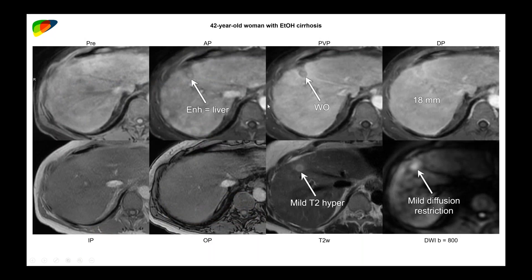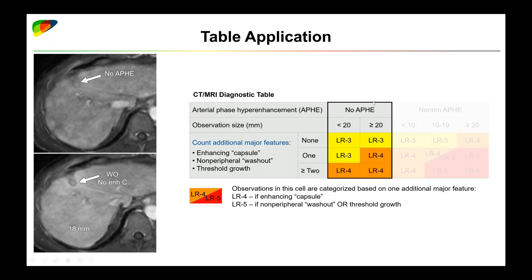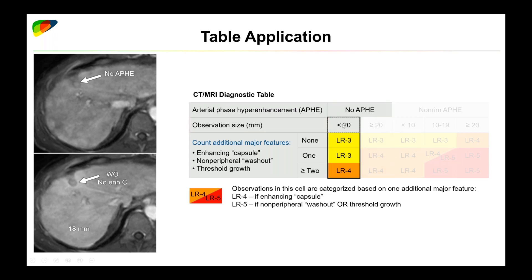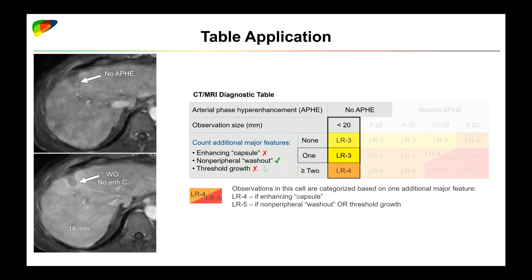Here's an example: a 42-year-old woman with cirrhosis. We have an 18-millimeter observation, enhancing similarly to liver on arterial phase, has a washout, T2 hyperintensity, and diffusion restriction. This is neither benign nor does it have any targetoid features to assign LRM category, so we'll proceed with the table. First, we look at whether or not there's arterial phase hyperenhancement. Since it doesn't hyperenhance, there's no APHE, so we select the portion of the table labeled 'No APHE.' The observation is 18 mm, so we select the column labeled less than 20 millimeters. We count additional major features — in this case, non-peripheral washout, but no capsule or threshold growth — so we select the row labeled 1. The intersection gives us LR3.